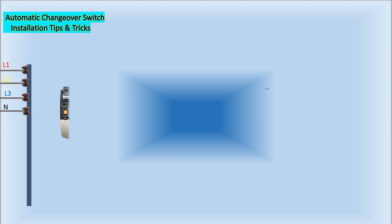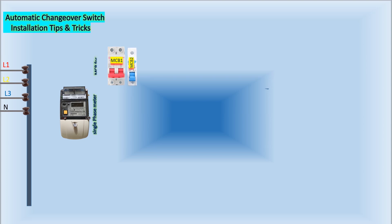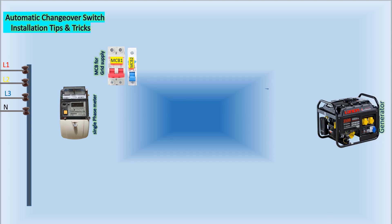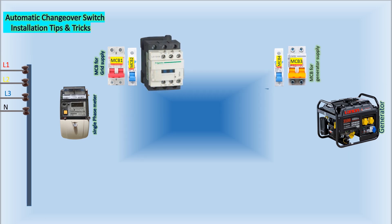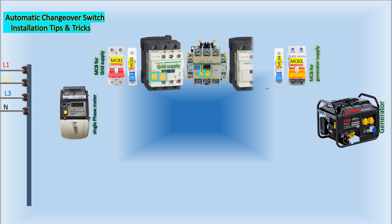The ATS consists of several components. These include an energy meter, a two-pole MCB for the grid supply, and a single-pole MCB for control. For the backup generator supply, a two-pole MCB and a six-amp single-pole MCB are used for the power and control circuits, respectively. Additionally, three contactors are employed in this changeover switch: K1 for the grid supply, K2 as an auxiliary contactor, and K3 for the generator supply.